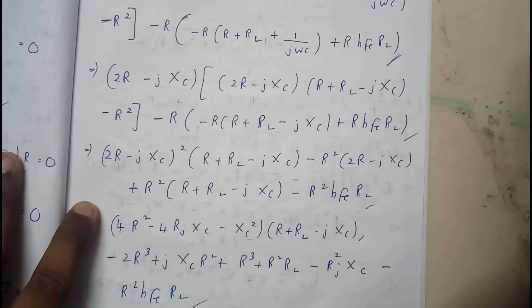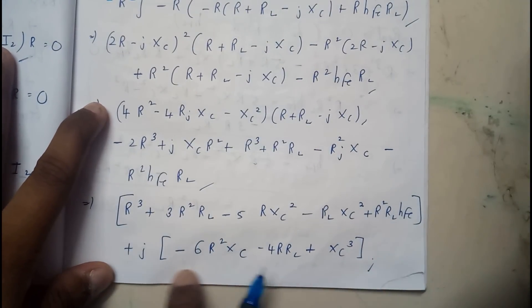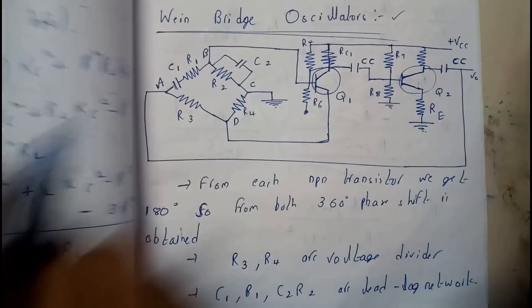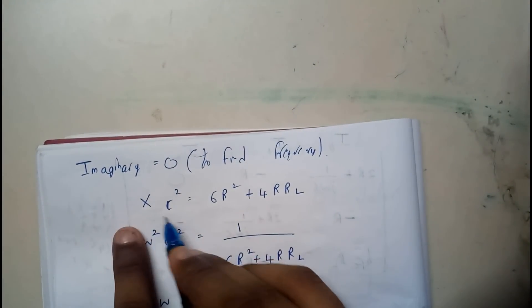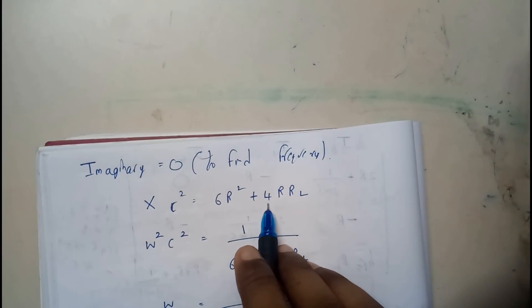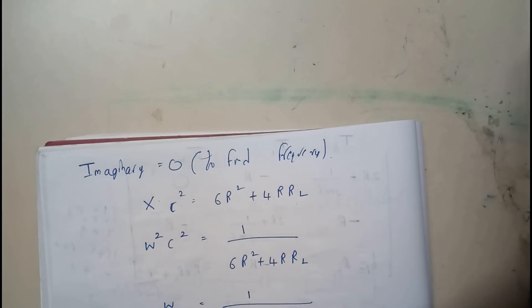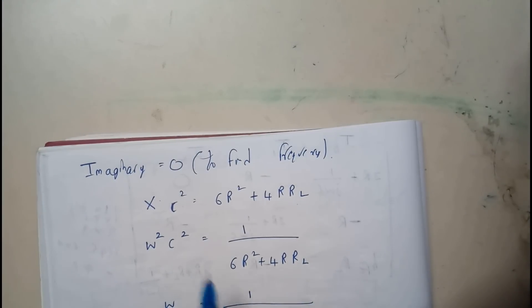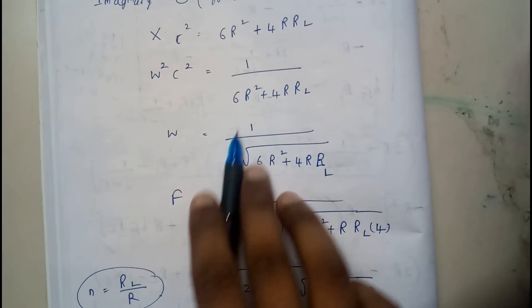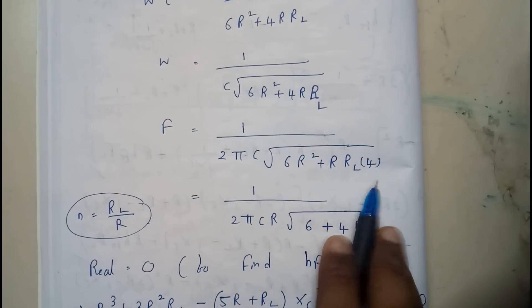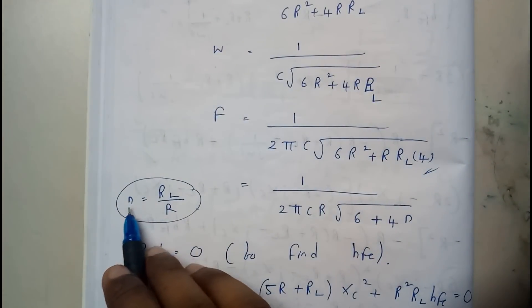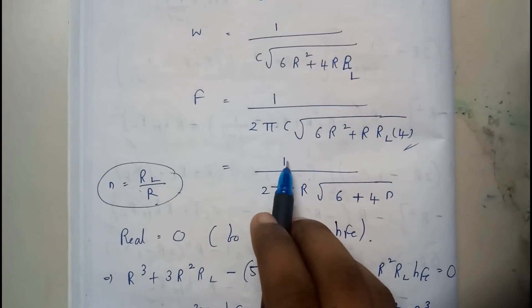After careful calculation, we separate the imaginary and real parts. Setting the imaginary part equal to zero gives the frequency equation: Xc² = 6R² + 4R·RL. Substituting Xc = 1/wC and rearranging, we get w = 1/√(6R²+4RRL)·C, and since w = 2πf, the frequency is f = 1 / (2πC√(6R² + 4RRL)).